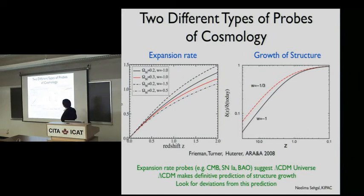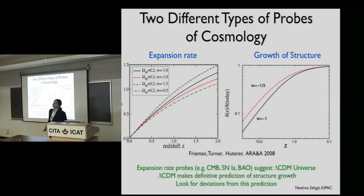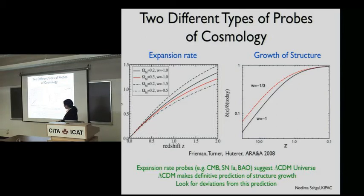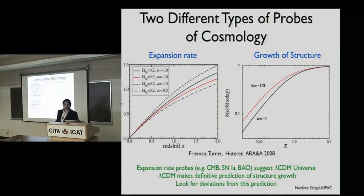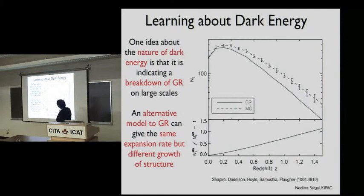Many people are motivated by trying to measure the growth of structures, which is a completely independent way to measure cosmology. Since dark energy is so difficult to explain theoretically as vacuum energy, people have looked for alternatives — maybe gravity is breaking down on larger scales. Lambda CDM makes a very definitive prediction of how structure grows throughout the universe: we expect this many clusters above a given mass in a given region. We're looking for deviations that would suggest our concordance model has some problem. For example, a modified gravity DGP model would give the exact same expansion history but different numbers of clusters as a function of redshift.